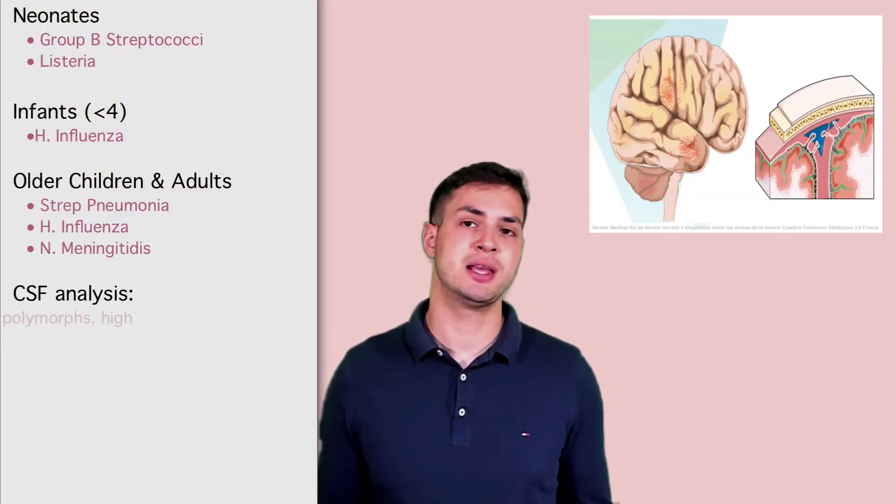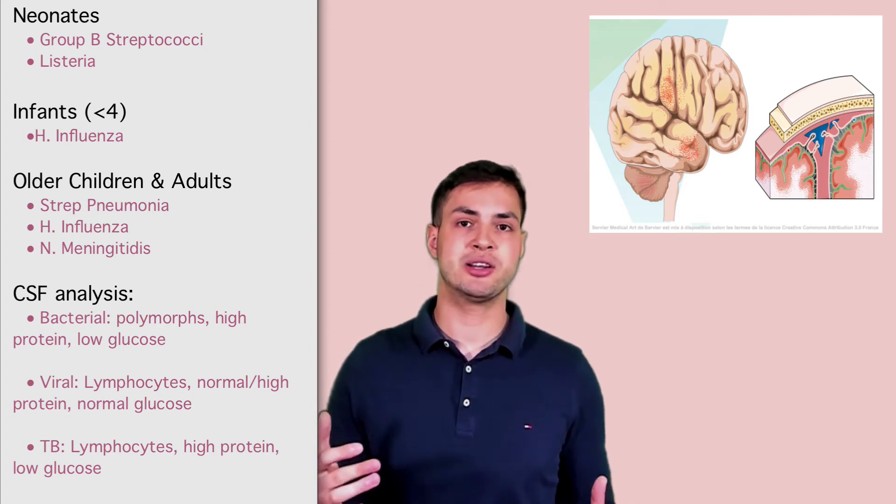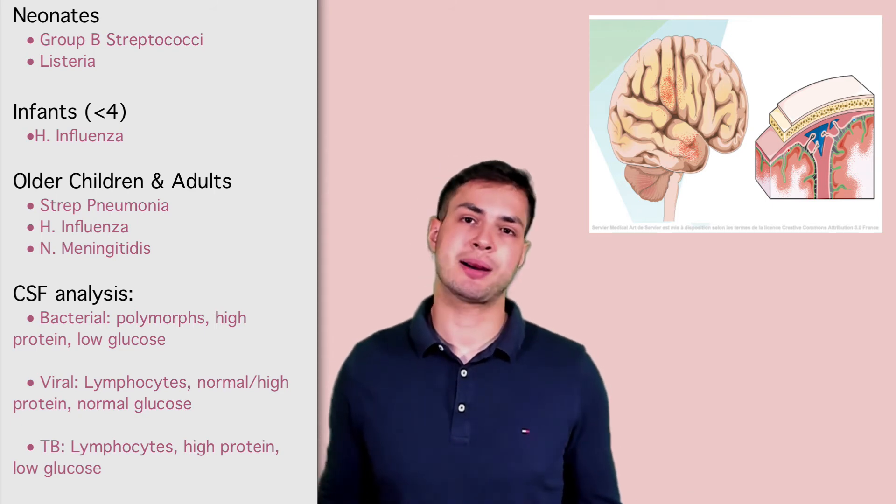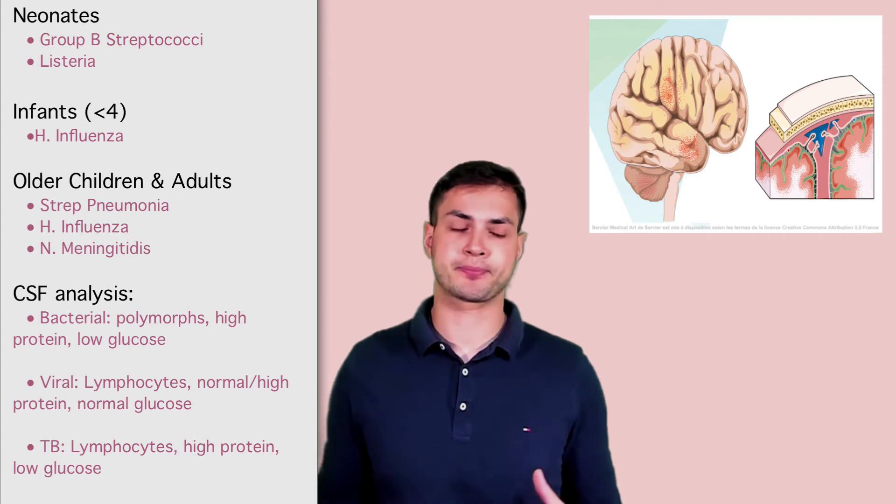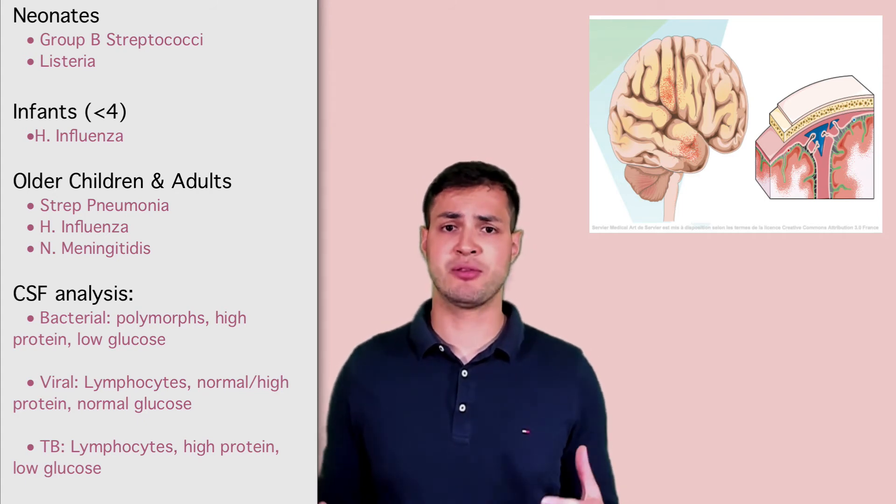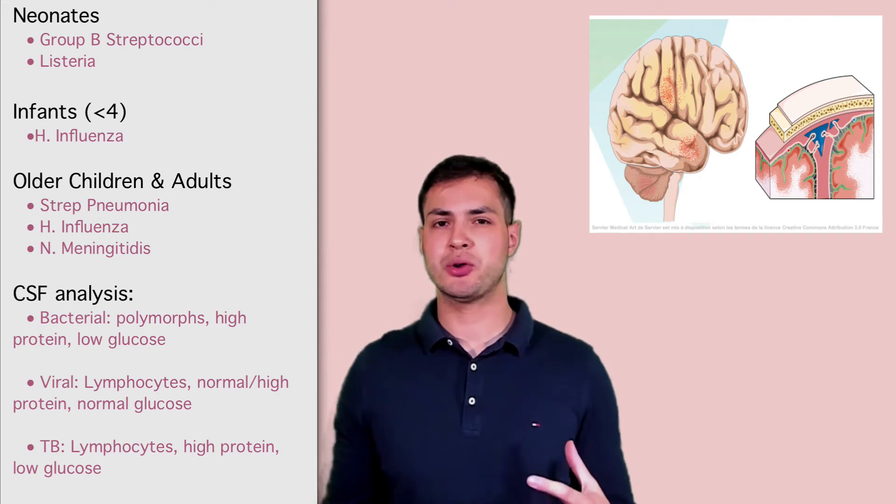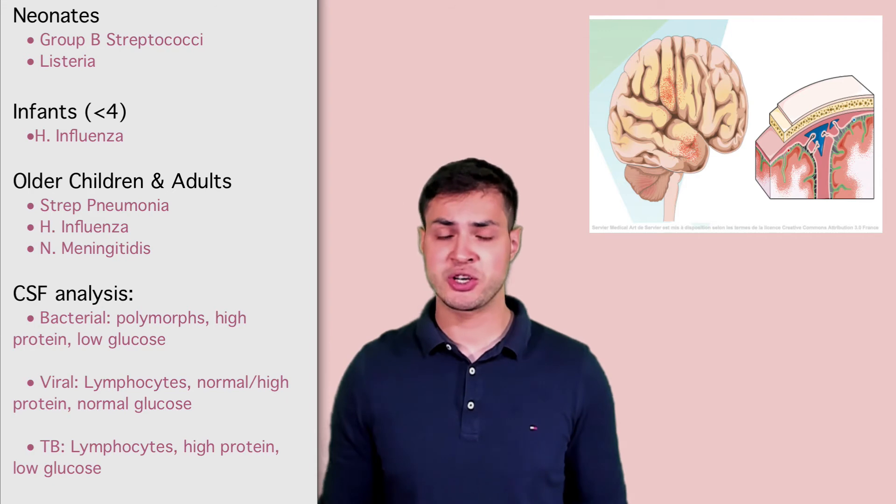So the next thing I want to talk about is meningitis. As I said, inflammation or infection of the meninges. It's usually bacterial in form and the bacteria or organisms vary depending on what age you are. In neonates, the bacteria could be group B strep or listeria. In children, it's usually haemophilus influenzae. In adults, it could be haemophilus influenzae or strep pneumoniae. So how do we figure out if meningitis is bacterial, viral or TB? That's a common exam question.